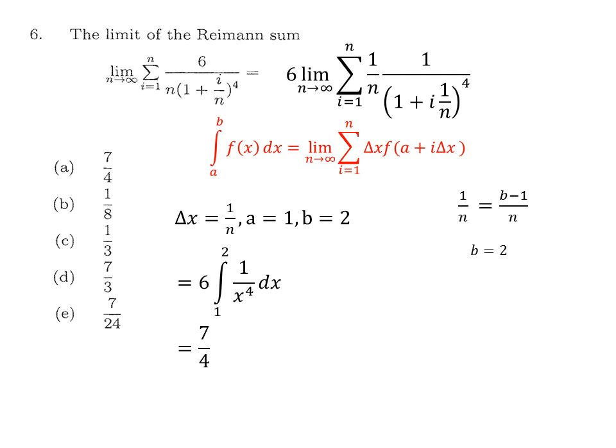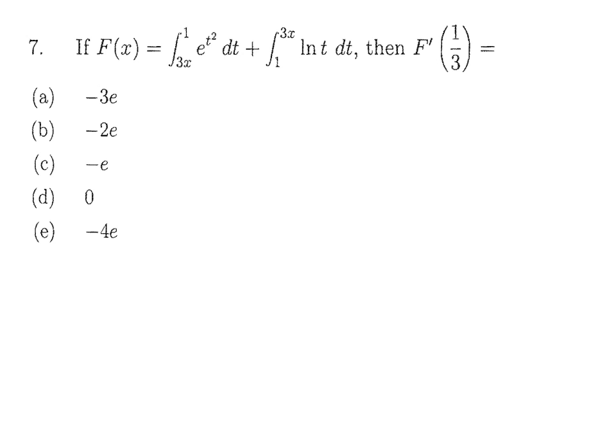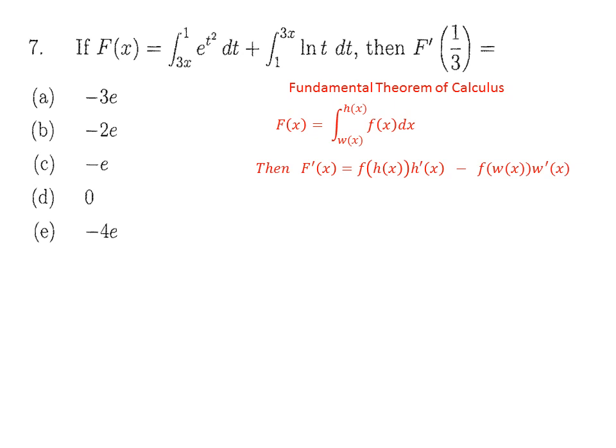For question 7, we use the Fundamental Theorem of Calculus. If the upper limit of the first integral is constant, its derivative contribution is zero; similarly for a constant lower limit in the second integral. We then plug in x = 1/3, and after simplification the result involves 3e — with the correct sign being minus 3 — so part A is the answer.